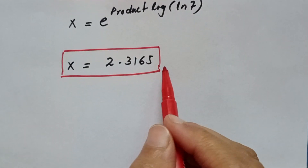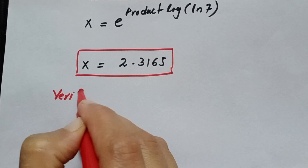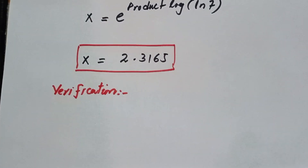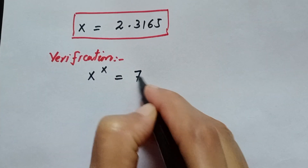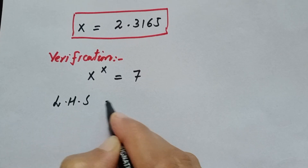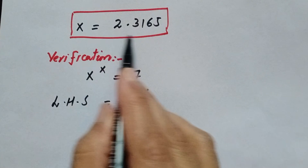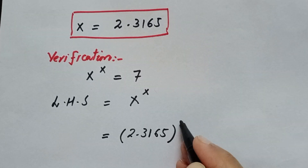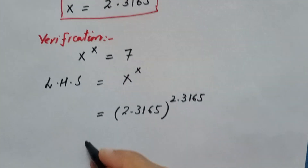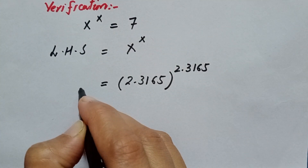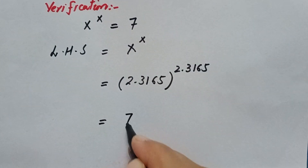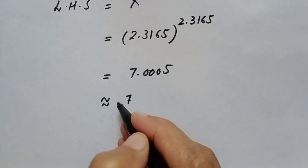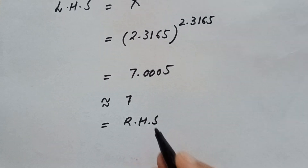We will plug this value back into the original expression to verify. The left-hand side is x^x = 2.3165^2.3165. Using a calculator, we get approximately 7.0005, which is approximately equal to 7 — matching the right-hand side. So the left-hand side equals the right-hand side.